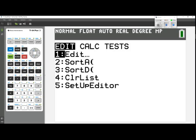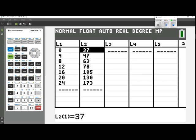So we press the stat button, and then we go into edit, and then we type the numbers into list 1 and list 2.